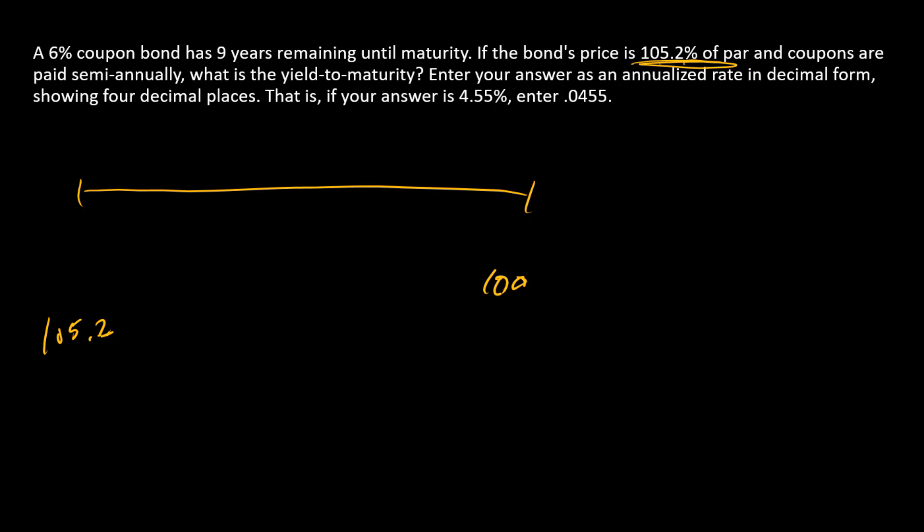Now, how many periods are on this timeline? Well, we have nine years remaining until maturity and we're going to have semi-annual coupon payments, so we have nine times two, which is 18 ticks on the timeline.